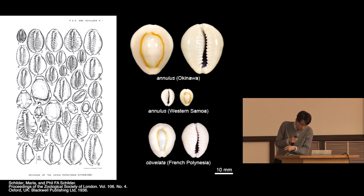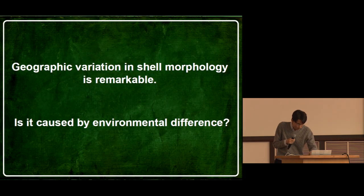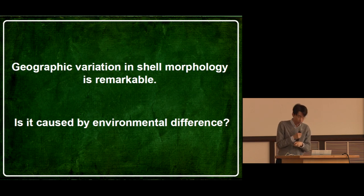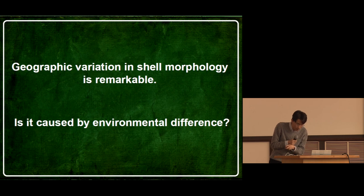This subspecies has a unique shell shape such that external calcification uniformly proceeds over the lateral part, delimited from the central dorsal area. Cowries show remarkable variation in shell size and shell shape. The variation itself has a long history of scientific study, but its ecological cause had been unclear. I wondered if the variation is caused by the difference of environmental conditions among localities.